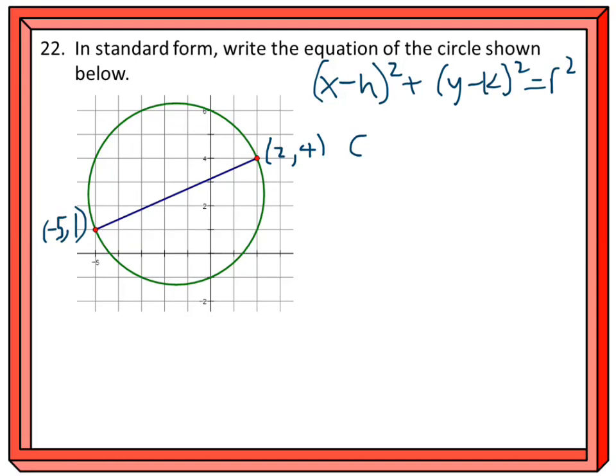The center point, h and k, is going to be (-5 + 2)/2 for the x-coordinate, and (1 + 4)/2 for the y-coordinate. Averaging these out,